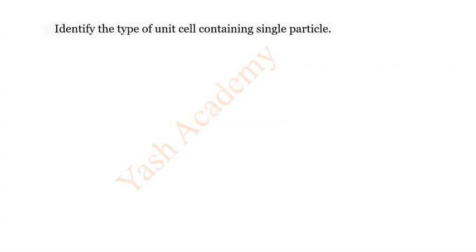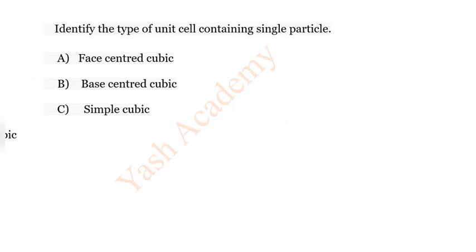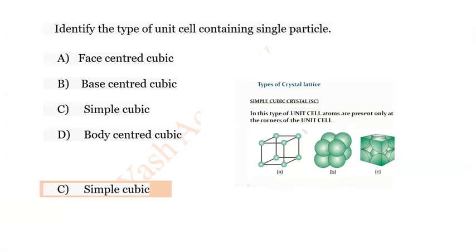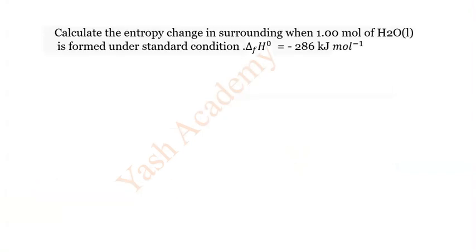Question 6: Identify the type of unit cell containing a single particle. Options: A) Face-centered cubic, B) Base-centered cubic, C) Simple cubic, D) Body-centered cubic. The correct answer is C) Simple cubic.